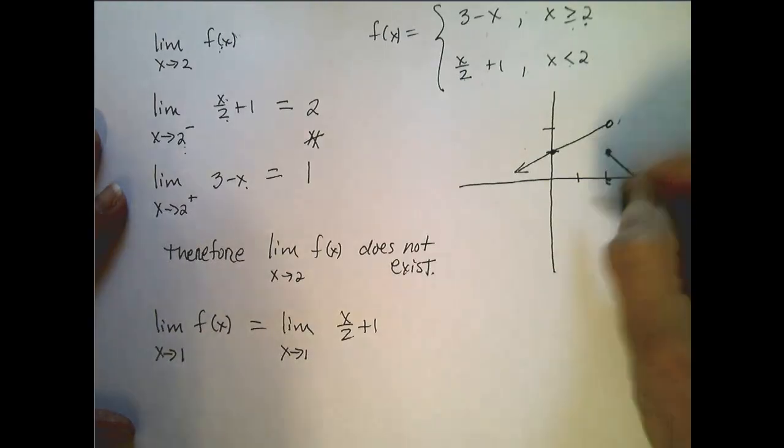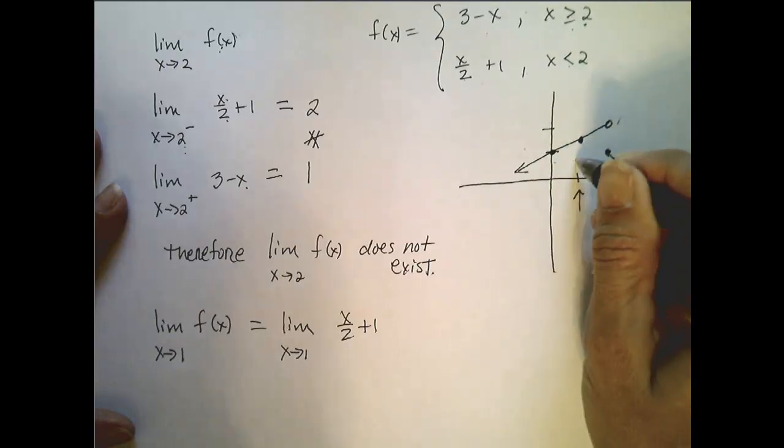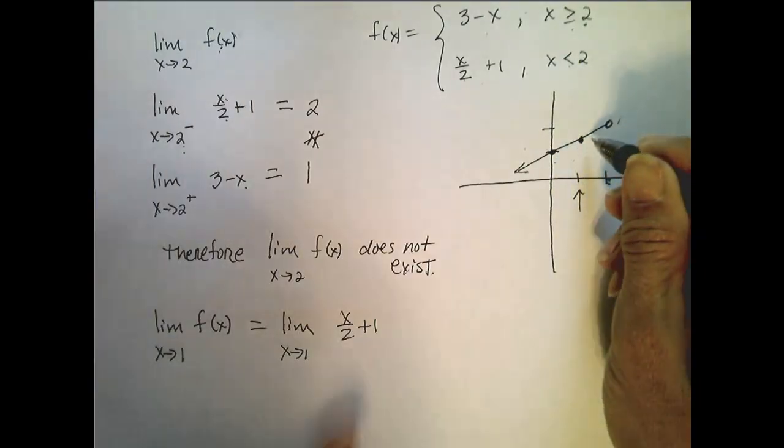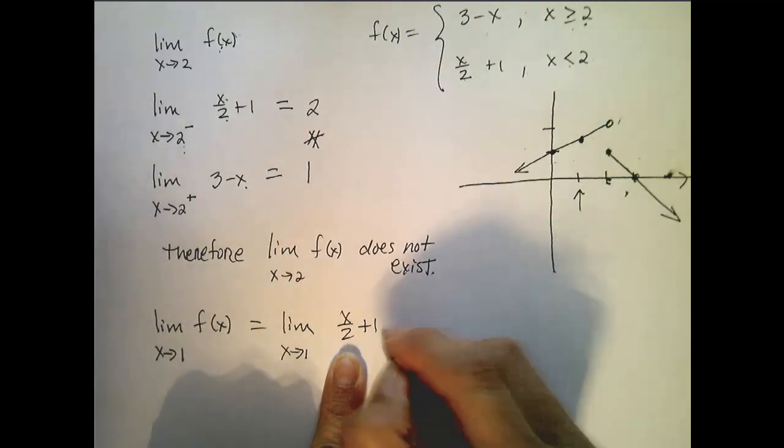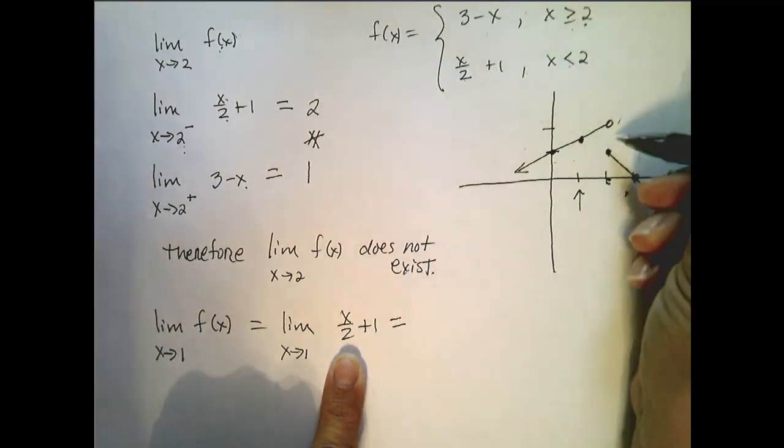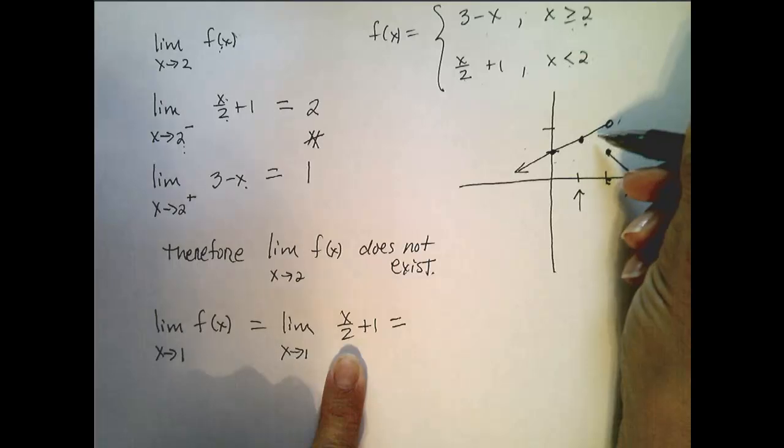Because here's my x of interest in this case, and from the left of 1, my function is approaching 1 half plus 1, which is 3 halves. And from the right of 1, it's approaching that same value.